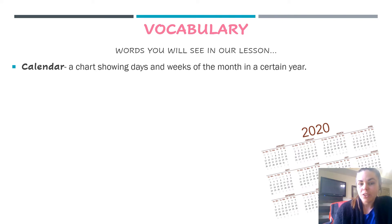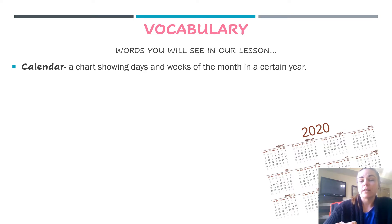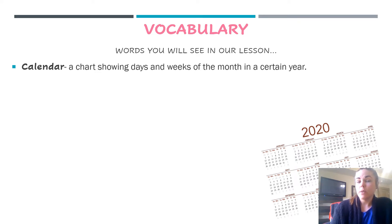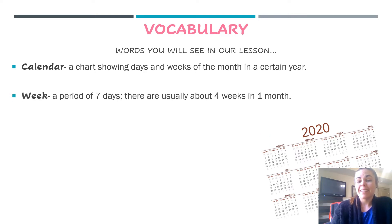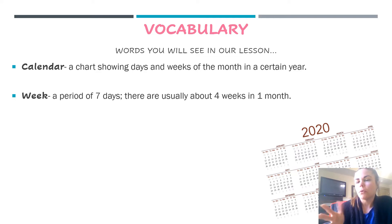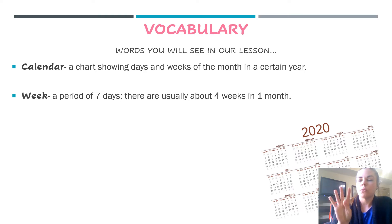So a calendar is a chart showing days and weeks of the month in a certain year. We're going to be talking about the year 2020 because that's the year we're in right now. A week is a period of seven days, and there are usually about four weeks in a month — sometimes that gets a little tricky, but usually about four weeks in a month.